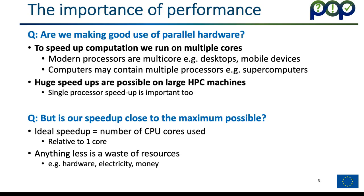Performance is key for parallel software. We have at our disposal multiple processors — for example mobile devices, desktops, laptops — and we may also have access to large HPC machines and supercomputers which contain many multi-core processors. We write parallel software with the aim of running over multiple CPU cores and getting faster performance, and in theory huge speedups are possible. It's really important to understand if we're making good use of the hardware. Ideally we want the speedup to be equal or close to the number of cores used, because anything else is a waste of resources — whether hardware, electricity, or cloud costs.